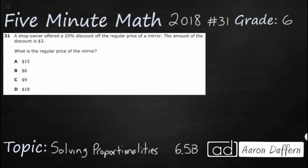So, we have a shop owner that is offering a 20% discount, which is very nice, and that discount equals $3. So $3 off equals 20% off, but now we need to find the regular price.